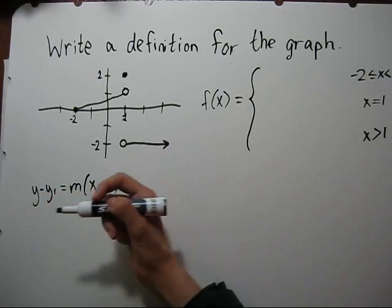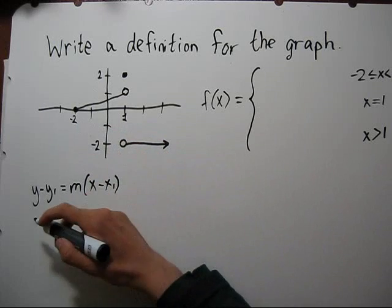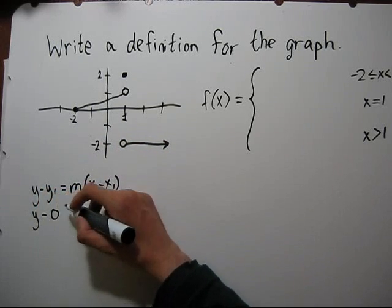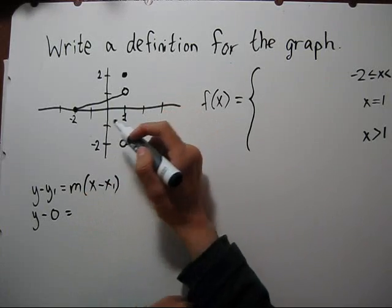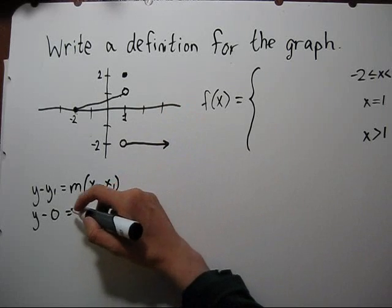And our point we're going to use is negative 2, 0. So we'll have y minus 0 equals, our slope, we rise 1, we run 3, so it's 1 third.